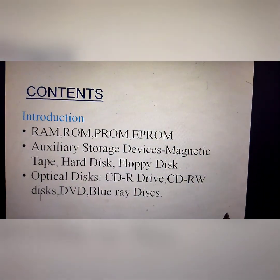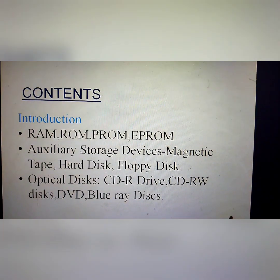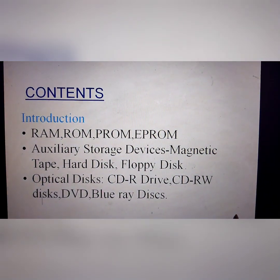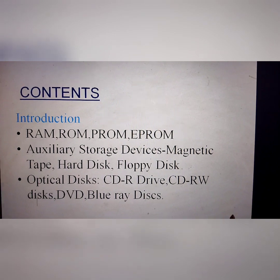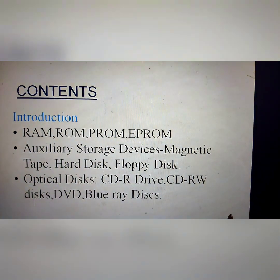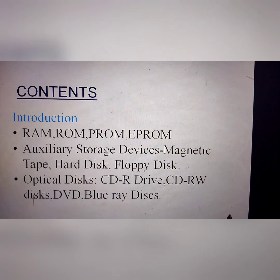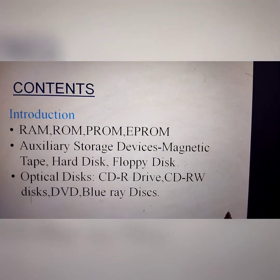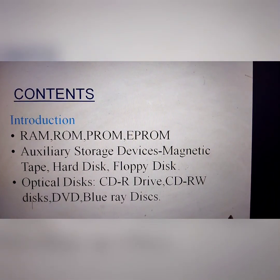First of all, the content you can see includes: Introduction, RAM, ROM, PROM, EPROM, Auxiliary Storage Devices, Magnetic Tape, Hard Disk, Floppy Disk, Optical Disk, CD-R, CD-RW, DVD, and Blu-ray Disk. So all of these are contents related to memory.